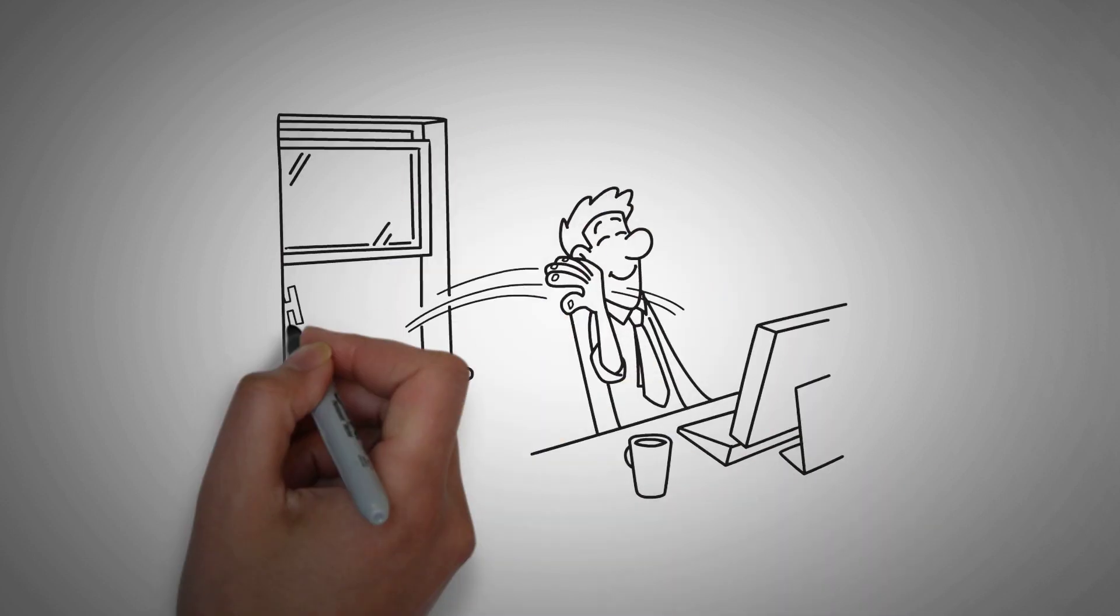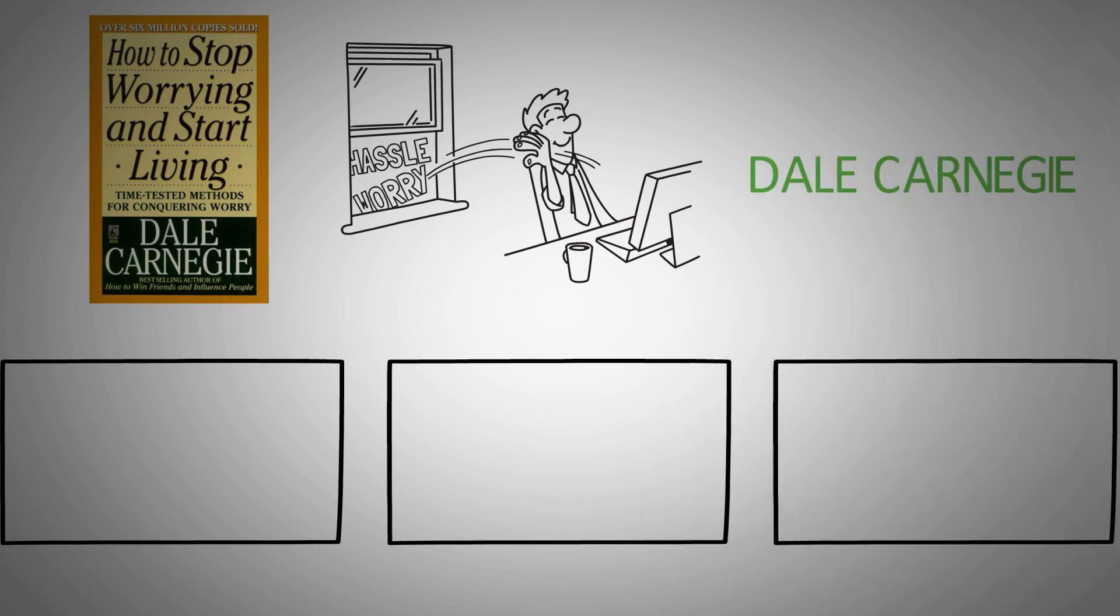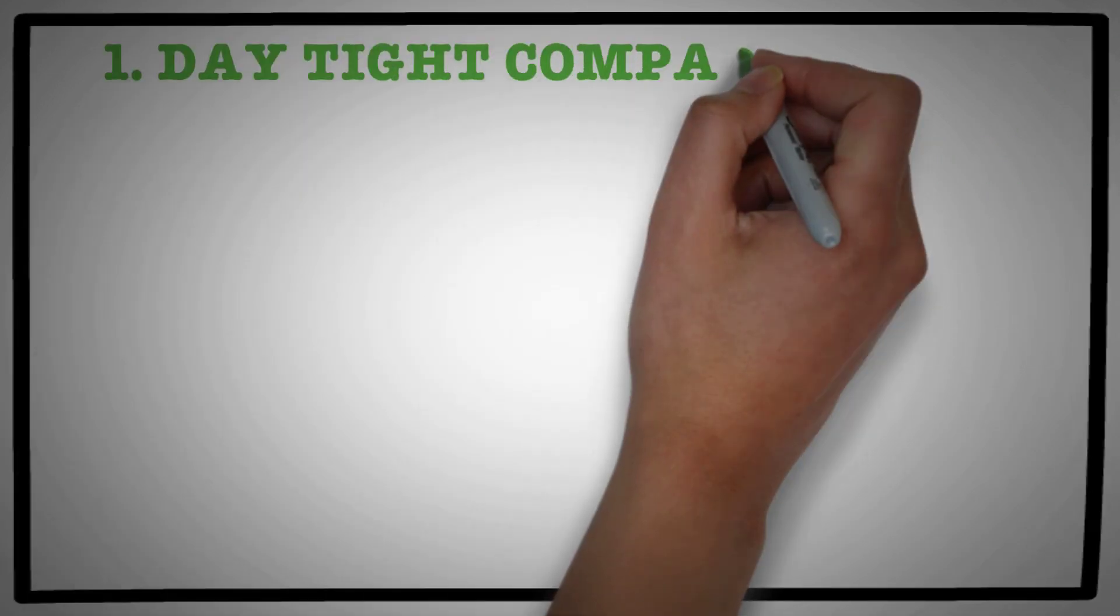Let's talk about the three key strategies to how to stop worrying and start living. And the first key strategy is to live in day-tight compartments.